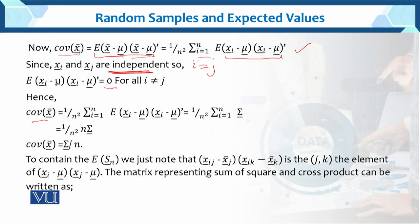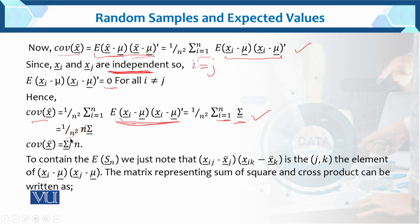Since sigma is a constant, summing n times gives n times sigma. So: covariance of x-bar = 1 over n-squared times n times sigma = sigma over n. Therefore covariance of x-bar equals sigma over n. Now we need to find the expected value of the sample variance.